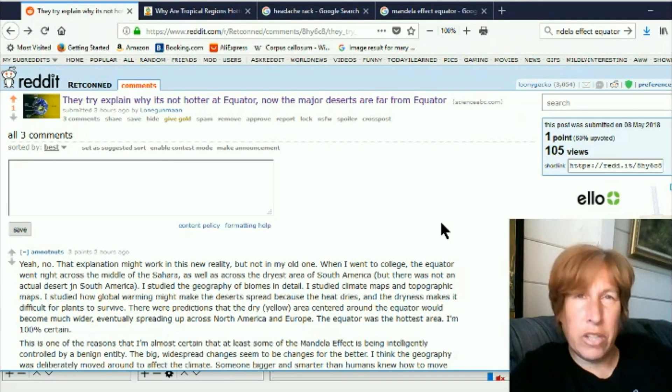Hi, this is Eva for Once Upon a Timeline and today we're going to talk about how the earth is no longer hotter at the equators.